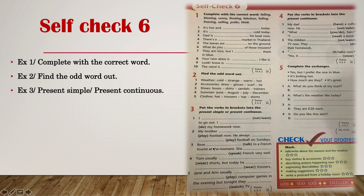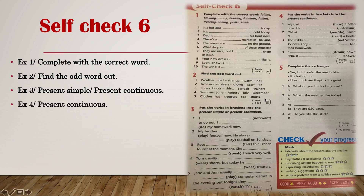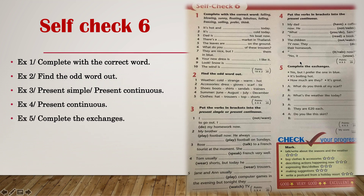Let's go on with Exercise 4. In Exercise 4, you are going to put the verbs in brackets into the present continuous form only. In Exercise 5, you are going to complete the exchanges by putting these sentences into the blank spaces.